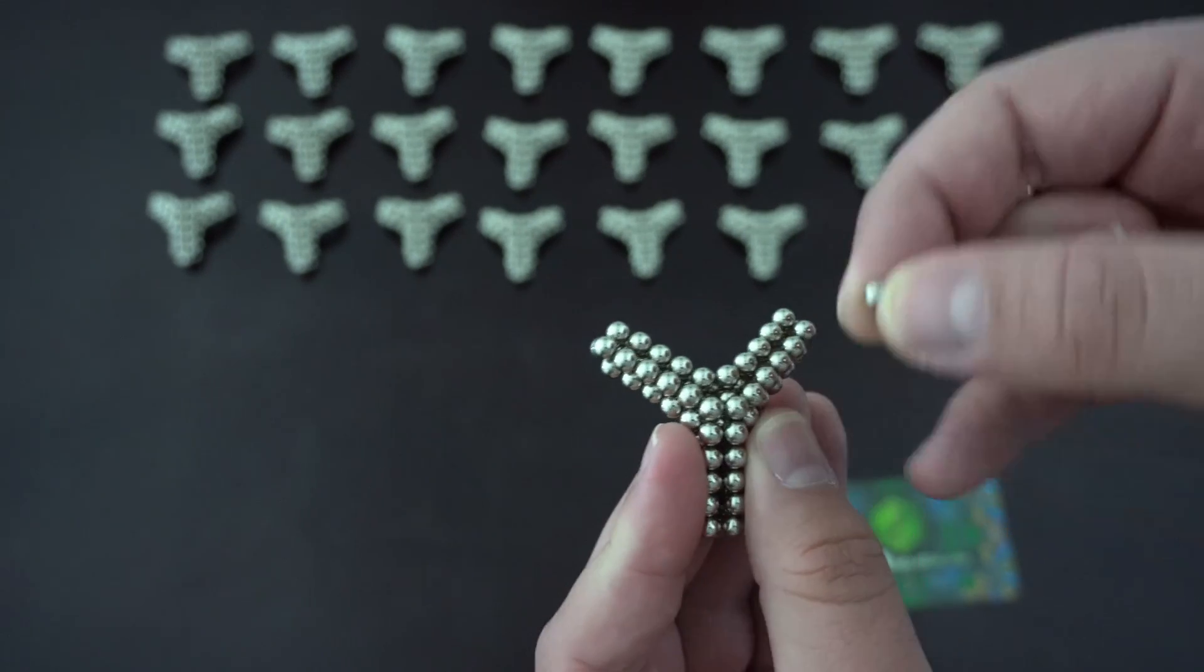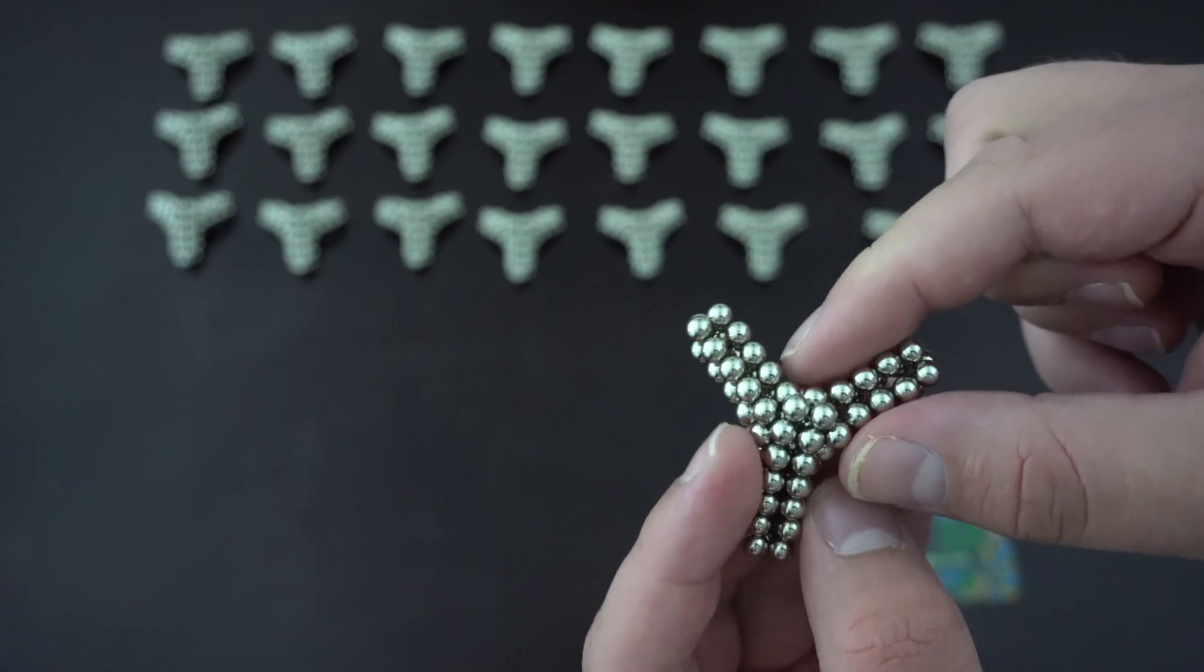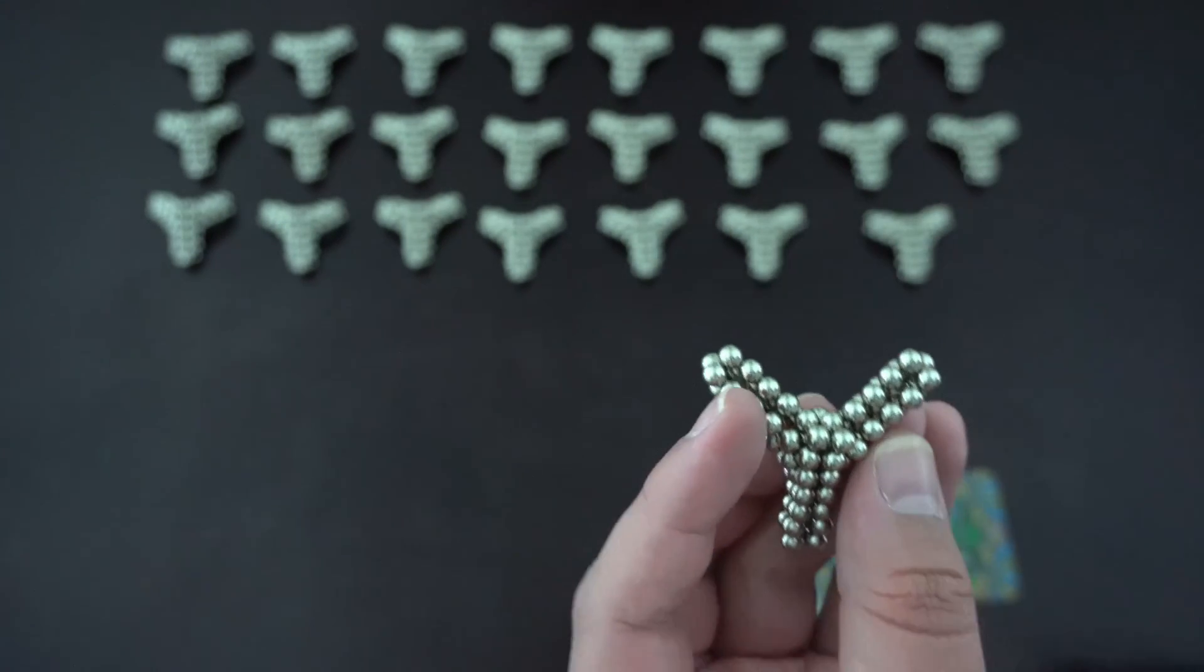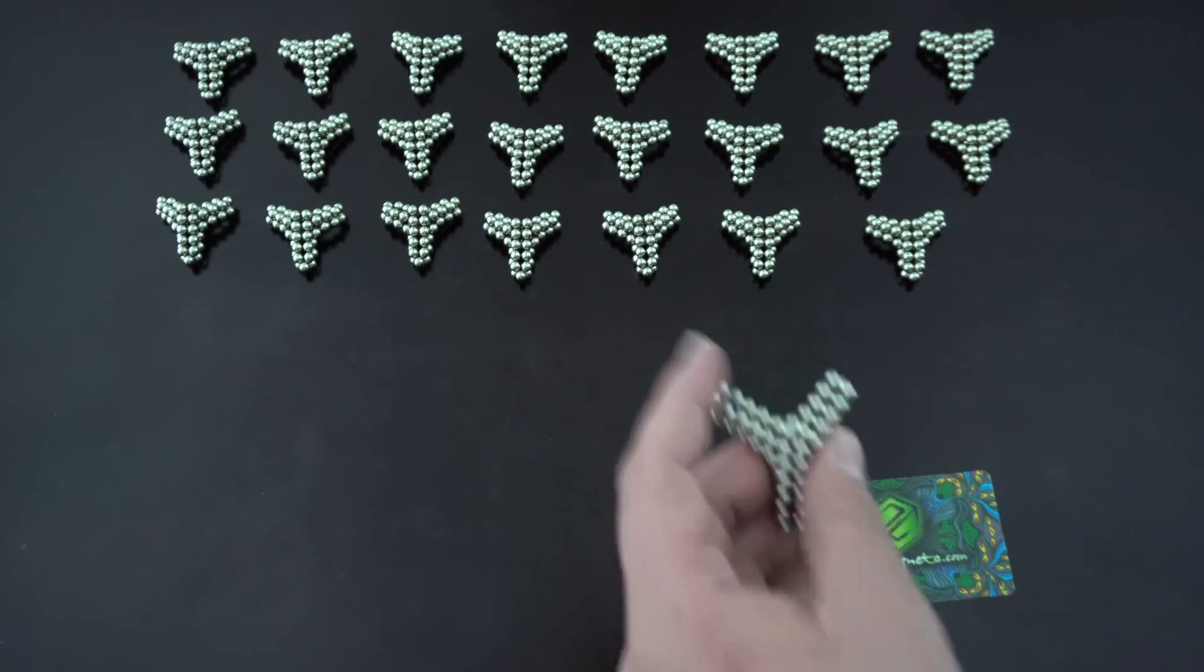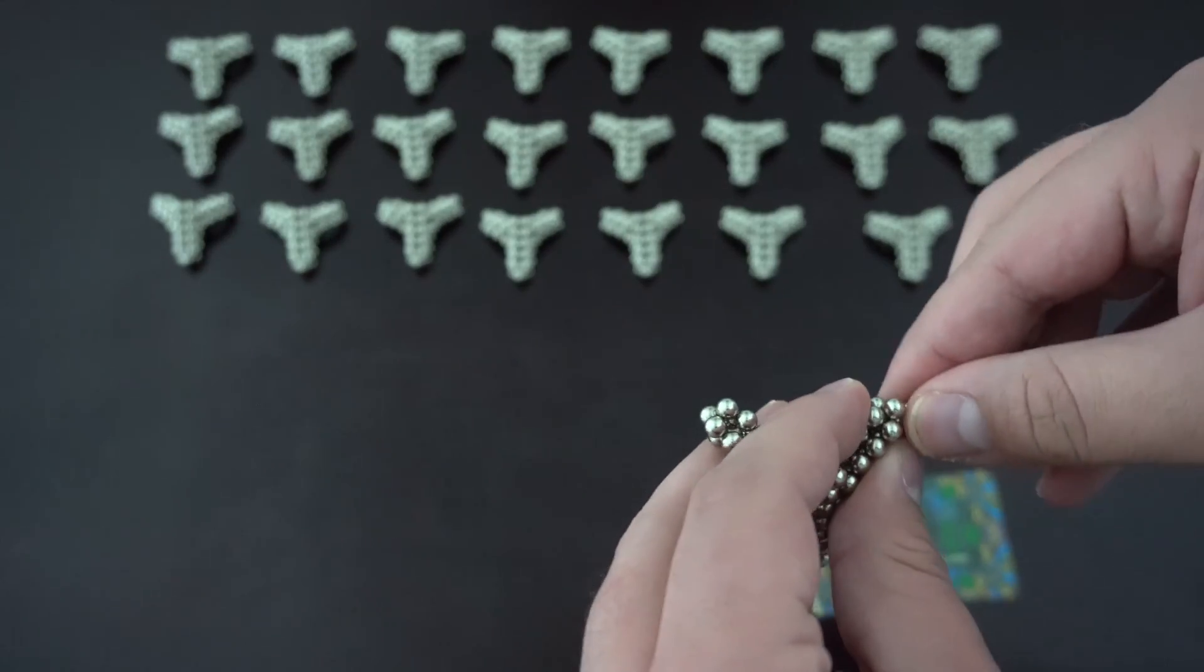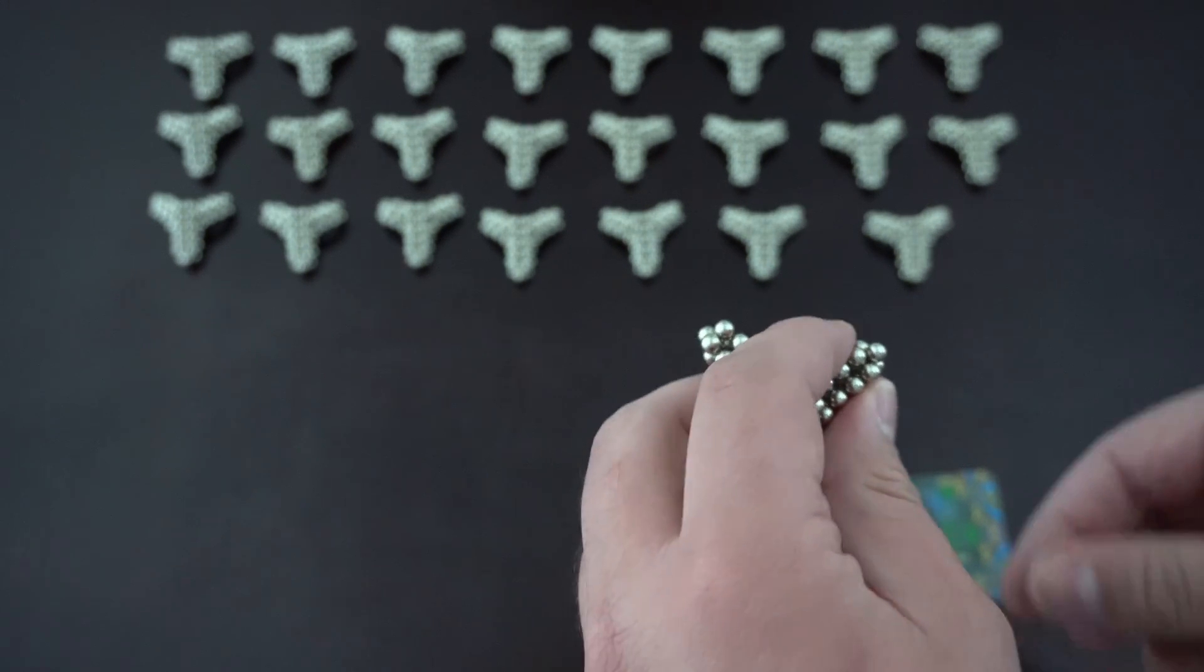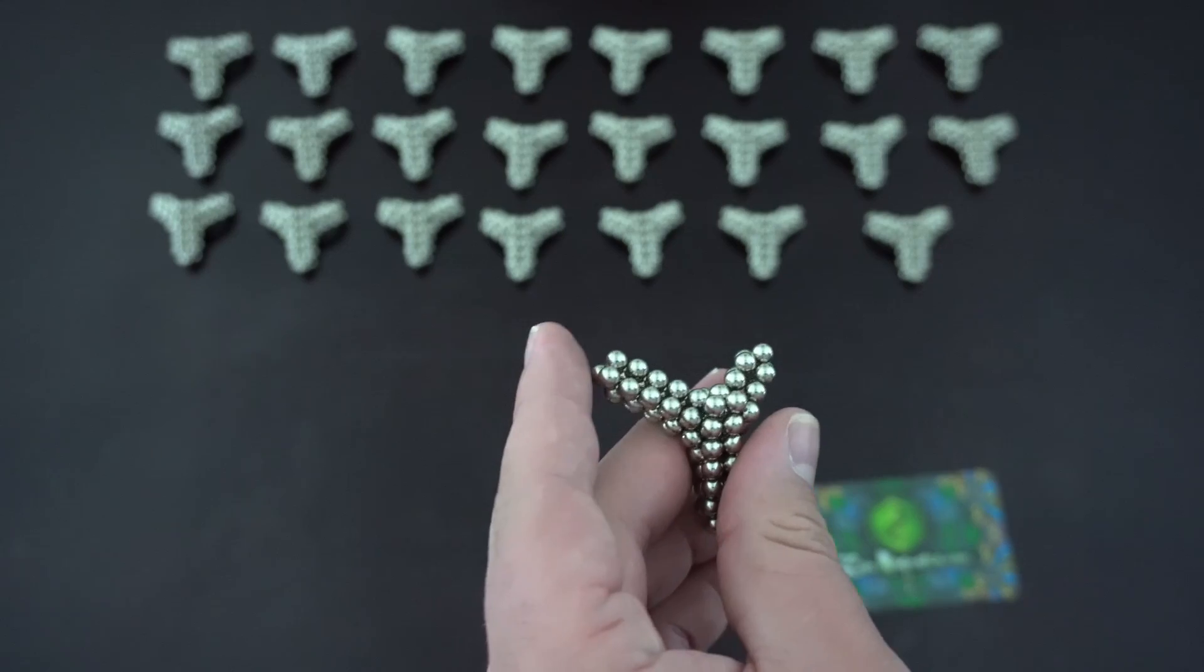Just like that. Now I'm going to shorten this edge up so that it's the same as all of these. For this particular one, I'm removing six magnets from each edge, just like that.